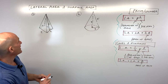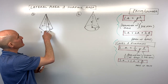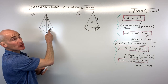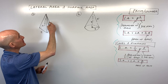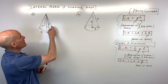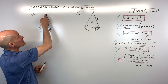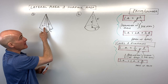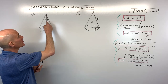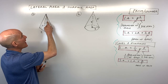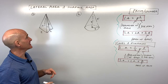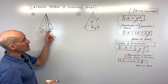The slant height is the height of one of the triangular faces — not the lateral edge along the corner, and not the overall height from vertex to center of the base (that's used for volume). Think of it as the leaning height. The slant height is what we use in the lateral area formula.